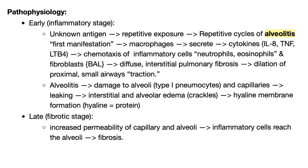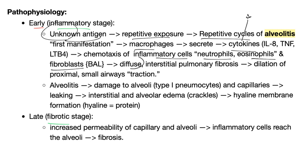What's the pathobiology of idiopathic pulmonary fibrosis? We have two stages: early, which has inflammation, and late, which has fibrosis. In the early stage, repetitive exposure to an unknown antigen leads to repetitive cycles of alveolitis. Macrophages secrete cytokines, which recruit neutrophils, eosinophils, and fibroblasts, leading to diffuse interstitial pulmonary fibrosis and dilation of the proximal small airways — we call this traction bronchiectasis.